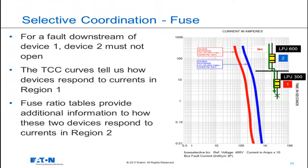Devices 1 and 2 are in series with each other in a power distribution system. For a short circuit downstream of device number 1, both devices will see the same short circuit current. To achieve selective coordination in that condition, device 1 should open and device 2 should not.